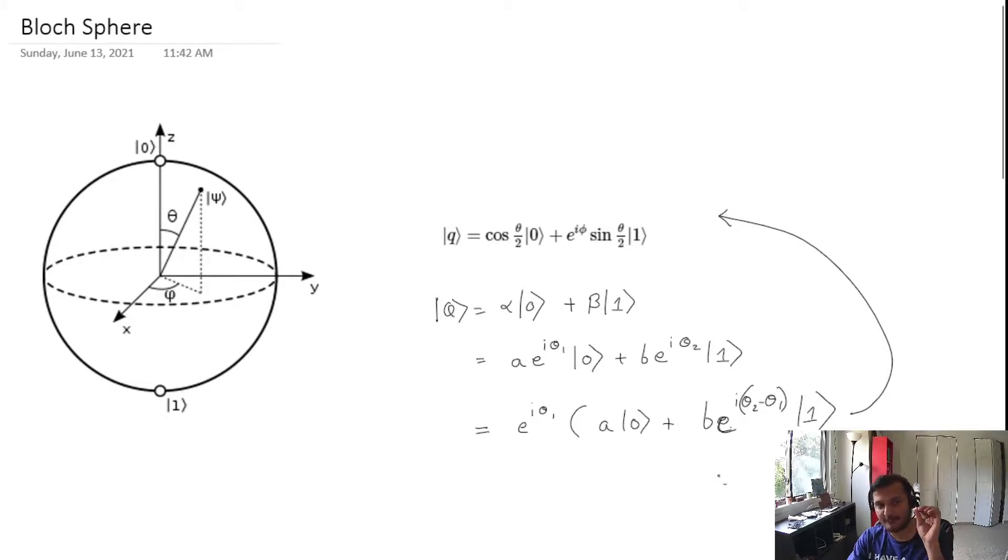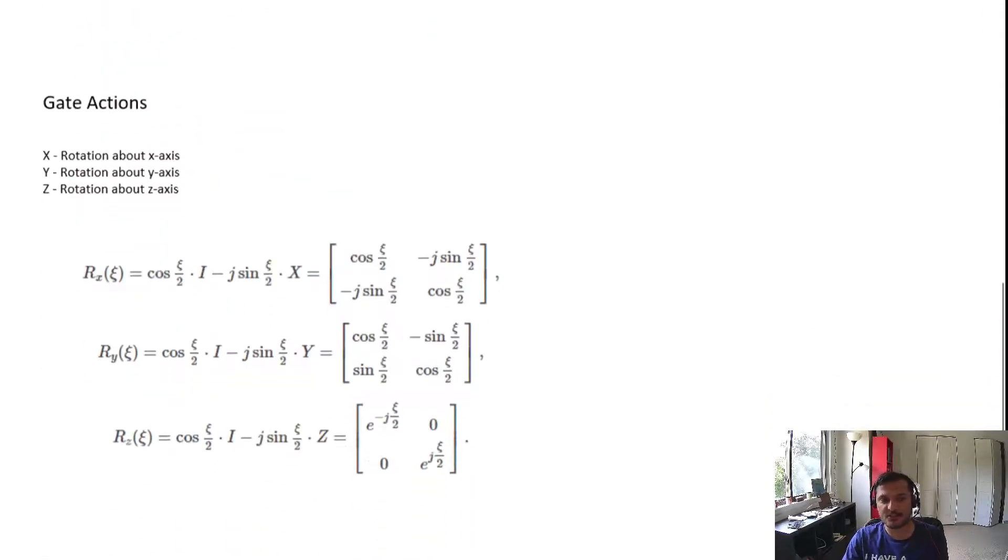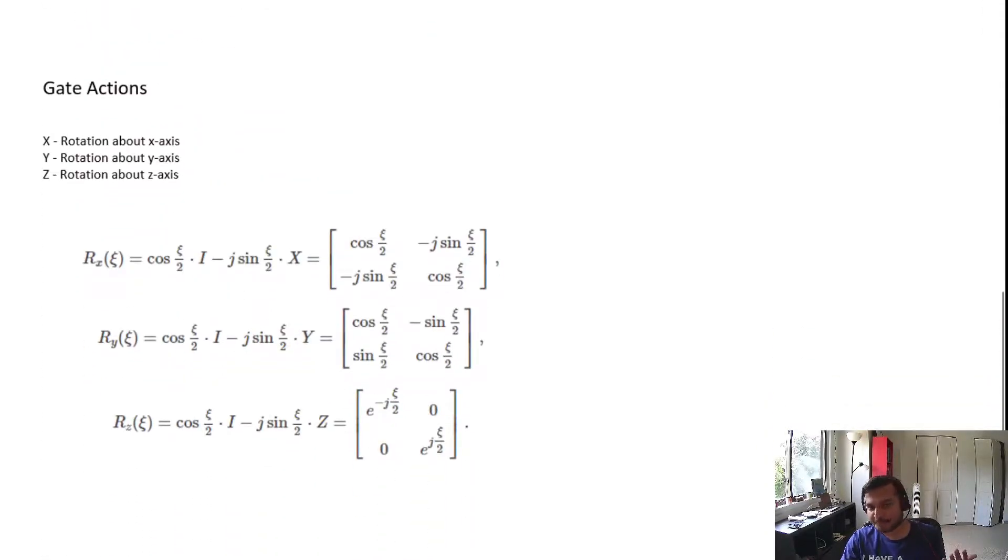X is coming out. If I flip this state about the x-axis by 180 degrees, it will point downwards. That's state one, and that's the action of the X gate, which is rotation about the x-axis by 180 degrees. Similar goes for Y and Z states. This is another representation of the X, Y, and Z gates, a more general representation.